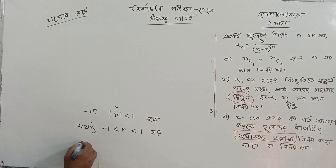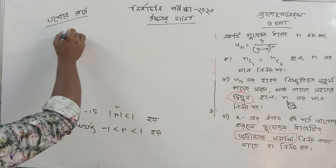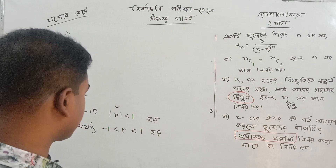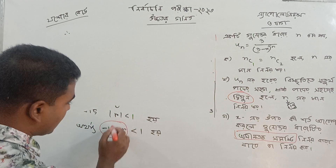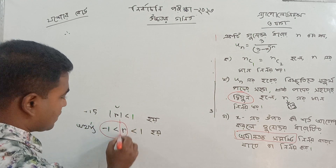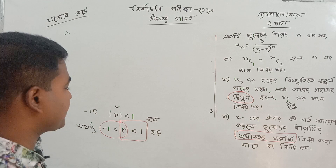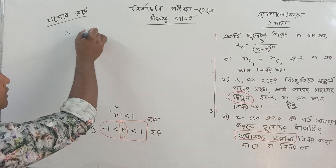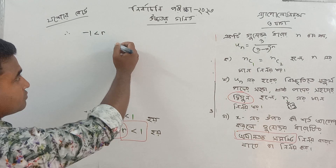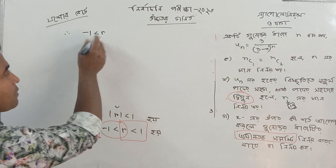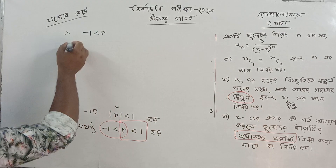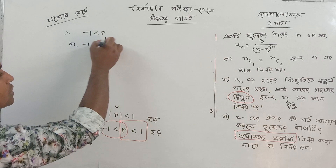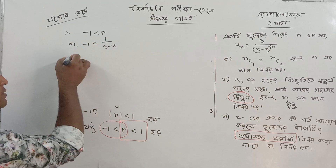This is the two parts. The two parts are going to be minus 1 less than r, and the other part is eta. Then we will say minus or less than r.